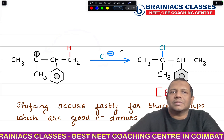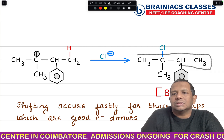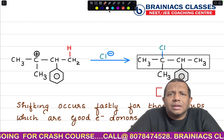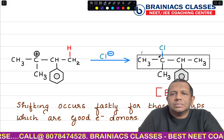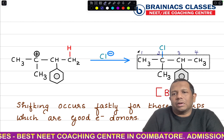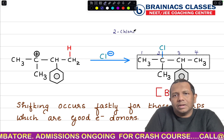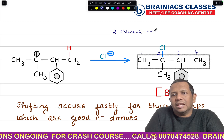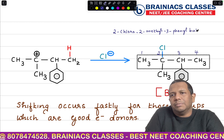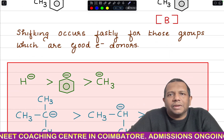Cl⁻ attacks the positive charge and you get the product. The parent chain — the longest possible chain — has four carbon atoms. Numbering from left to right (two substituents present): position 1, 2, 3, 4. The name is 2-chloro-2-methyl-3-phenylbutane.